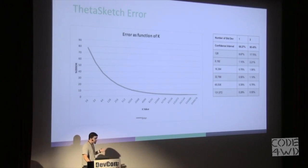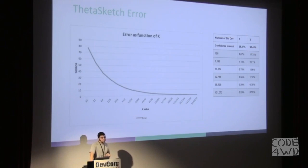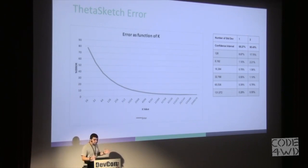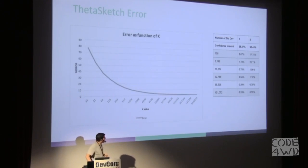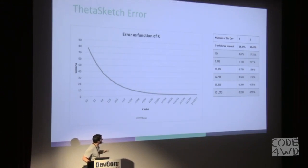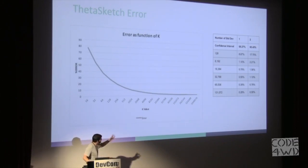I've added a table here showing different K values and the errors you can get. You can see that even for fairly small Ks, like 32,000, most of the time you're going to get errors below one percent.